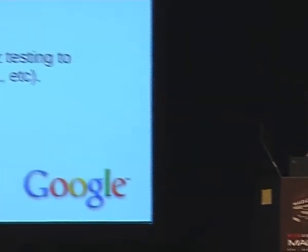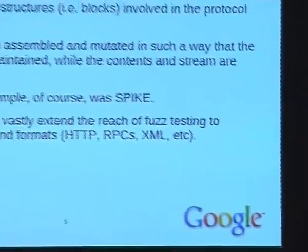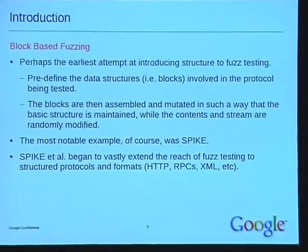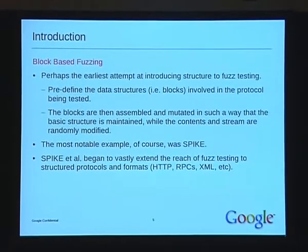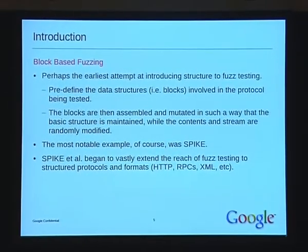The earliest attempt at introducing structure to fuzz testing was probably block-based fuzzing. Using this system, you basically define data structures that the protocol understands, or the program will parse — these are called blocks. The fuzzer will then assemble blocks in a random order, mutate them, or break whatever rules you've defined. This way it has some basic way of communicating with the program and can try to break it. The most notable example was SPIKE by Dave Aitel, who at the time broke pretty much everything — most famously the Microsoft RPC stuff, and also IIS and some other things.